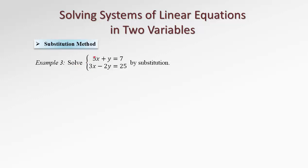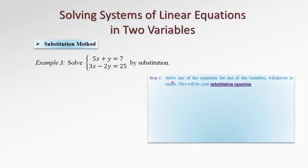Let's say we want to solve this system of equations. The first step would be to solve one of those equations for one of the variables, whichever is easier. The idea is to choose the variable that has the simplest coefficient. For example, if there is a variable with coefficient 1, that's the best choice. If not, if we have a choice between 3 and 2, 2 would be simpler, because those coefficients sooner or later become denominators.